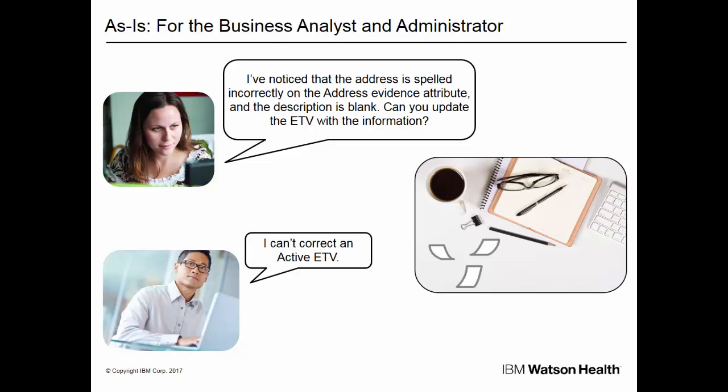In this scenario, Jane is a business analyst who works for an SPM agency, and Robert is the administrator at the same agency. Jane has noticed that the word 'address' is spelled incorrectly, and the description is blank on the address evidence attribute. Jane has spoken to Robert. They know the correct description for the evidence attribute. However, they cannot add the description to an active ETV without creating a new ETV for that dynamic evidence. Robert, the administrator, cannot correct an active ETV — if he needs to make a correction to a cluster title, label name, or add a description, he must create a new ETV. The new ETV will be correct going forward, but none of the corrections will be applied to any previous ETV.